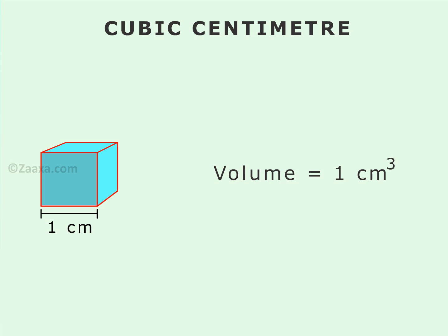In order to measure volumes, we make use of two standard units, namely, the cubic centimetre and the cubic metre. One cubic centimetre is the equivalent of the volume occupied by a cube of side one centimetre.